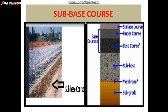Subbase course is the layer of materials beneath the base course. Its primary functions are to provide structural support and improved drainage. It may be WBM or WMM. A subbase course is not always needed or used — for example, a pavement constructed on high-quality subgrade may not require it.